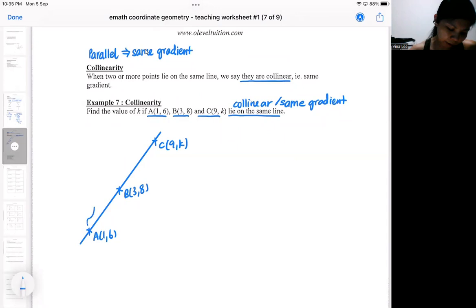Which means if I explore this gradient, gradient AB, if I explore this gradient, or if I explore this gradient, there are three possible gradients that I can explore. These three possible gradients should be the same numerical value.